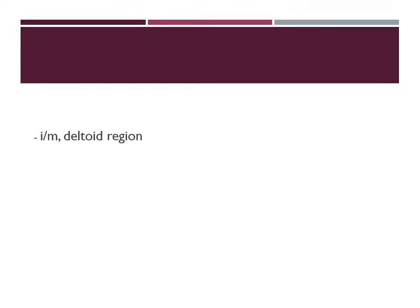Now, the route of administration for this vaccine is by intramuscular route. In adults, it is given in the deltoid region. In infants and children, it is given in the anterolateral aspect of the thigh. The dosing schedule is zero, one month, and six months — meaning today you take the first dose, one month later the second dose, and the third dose after six months.